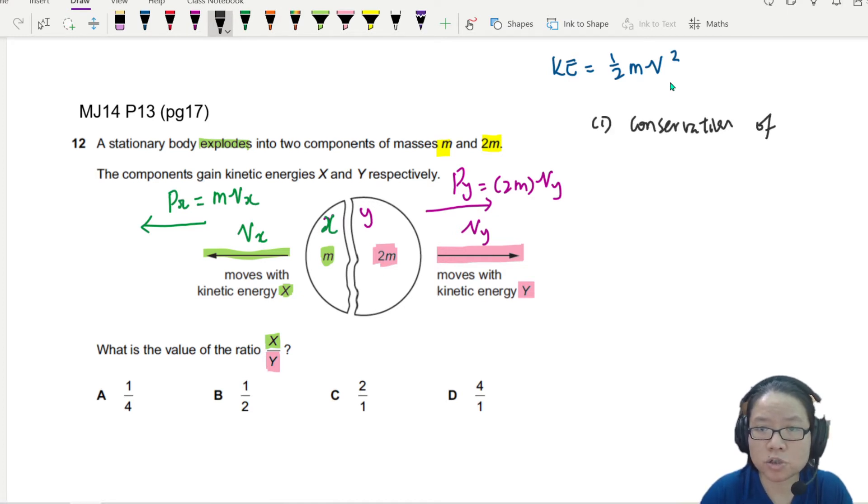So I expect the momentum of the system doesn't change. It's because there's no external force. You put a firecracker on the floor, then suddenly, boom, two pieces fly in the opposite direction. No external force.